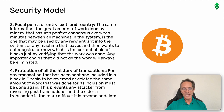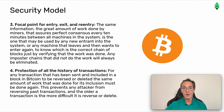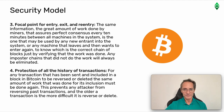Three: focal point for entry, exit, and re-entry. The same information — the great amount of work done by miners that assures perfect consensus every 10 minutes between all machines in the system — is the one that may be used by any new entrant into the system, or any machine that leaves and then wants to enter again, to know which is the correct chain of blocks just by verifying that the work was done. Any imposter chains that did not do the work will always be eliminated. Four: protection of all the history of transactions. For any transaction that has been sent and included in a block in Bitcoin to be reversed or deleted, the same amount of work that was done for its inclusion must be done again. This prevents any attacker from reversing past transactions, and the older a transaction is, the more difficult it is to reverse or delete.